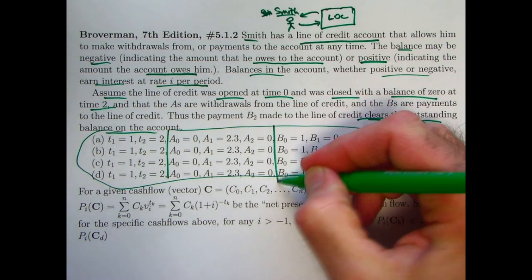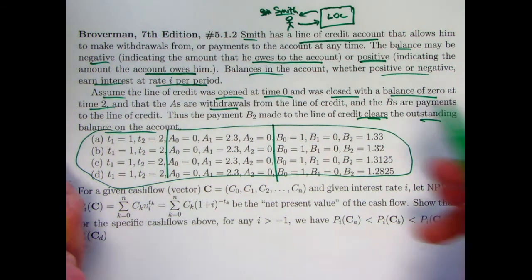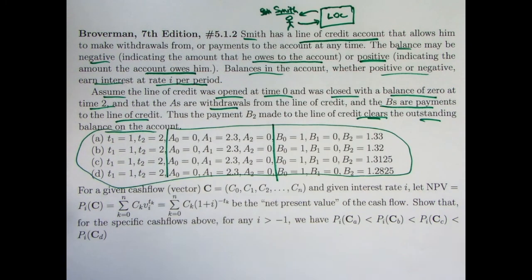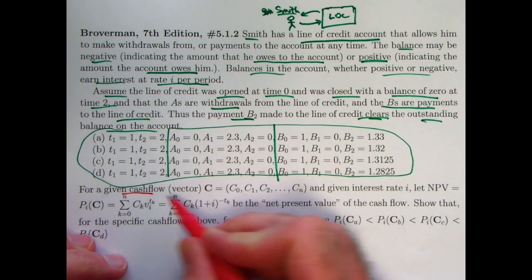You've got these A's and B's. The A's are withdrawals from the line of credit. Positive cash flow to Smith, though they tend to make the line of credit balance more negative. And the B's are payments to the line of credit, negative as far as cash flow from Smith's perspective at that moment in time. Thus, the payment B2, which is the only difference in comparing A, B, C, and D here, clears the outstanding balance.